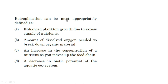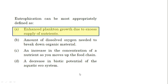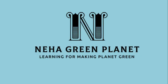Third question: eutrophication can be most appropriately defined as — (A) enhanced plankton growth due to excess supply of nutrients; (B) amount of dissolved oxygen needed to break down organic material; (C) an increase in concentration of nutrients as you move up the food chain; or (D) a decrease in biotic potential of aquatic ecosystem. Eutrophication is the process by which plankton or algal growth increases due to excessive nutrient supply, so the correct answer is option A. With this, we have completed the phosphorus cycle. Keep watching Neha Green Planet for more information on environment.